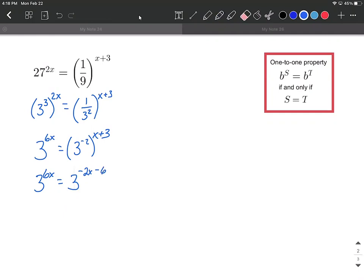Now we're at the point where we have the exact same base on both sides. We can drop the threes from our bases, set the exponents equal, and this brings us to a nice linear equation.